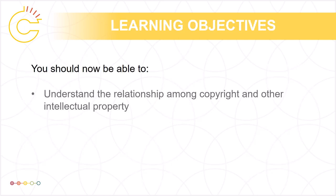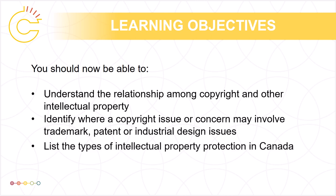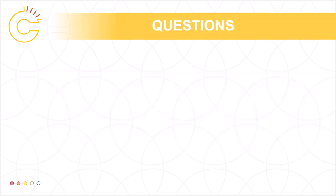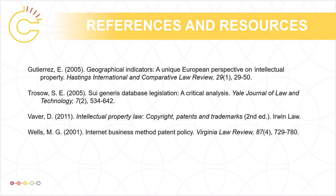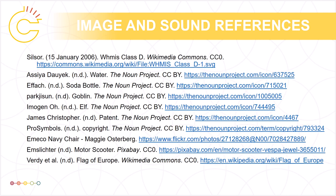You should now be able to understand the relationship among copyright and other intellectual properties, identify where a copyright issue or concern may involve trademark, patent, or industrial design issues, and list the types of intellectual property protection in Canada. This has been the University of Alberta's Opening Up Copyright Module on Other Types of Intellectual Property. Thank you for your attention.